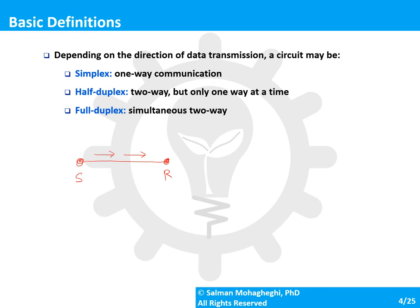Then we have full-duplex circuits, where two-way communication can happen simultaneously — both parties can transmit data at the same time. A good example is your cell phone. When you're talking to someone, both of you use a different frequency range, so both can send data without interfering with the other person.